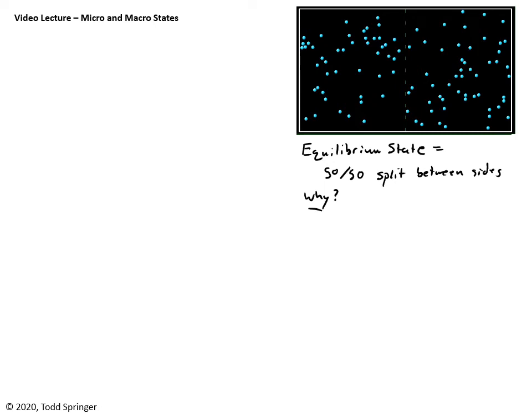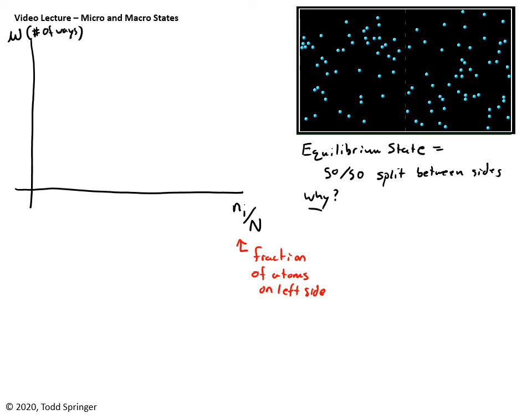So thinking about, let me try to make a graph here. I'm going to plot here N1 divided by the total number. So this is going to be the fraction of atoms on the left side, let's say. And then the y-axis is going to be the multiplicity omega, which is the number of ways that this can be achieved. So the number of microstates that lead to this. This goes from zero to one. Let's put one half in the middle. I'll put one quarter here and three quarters.